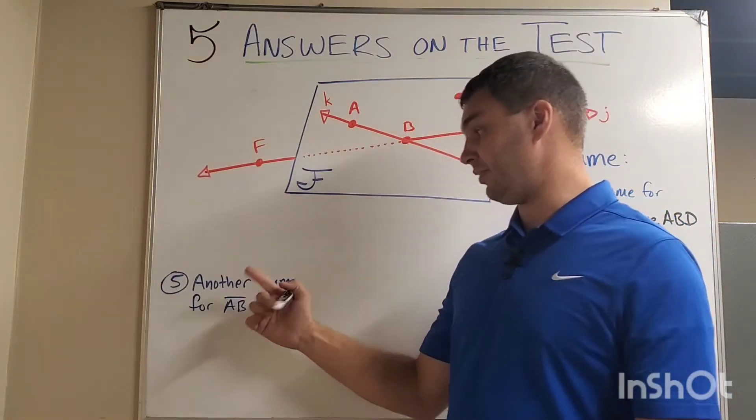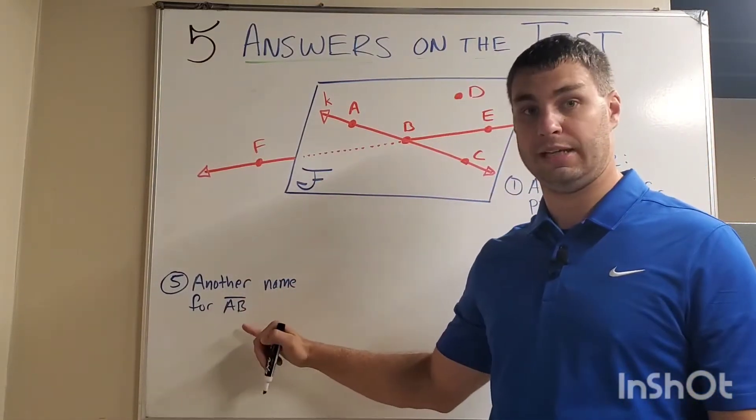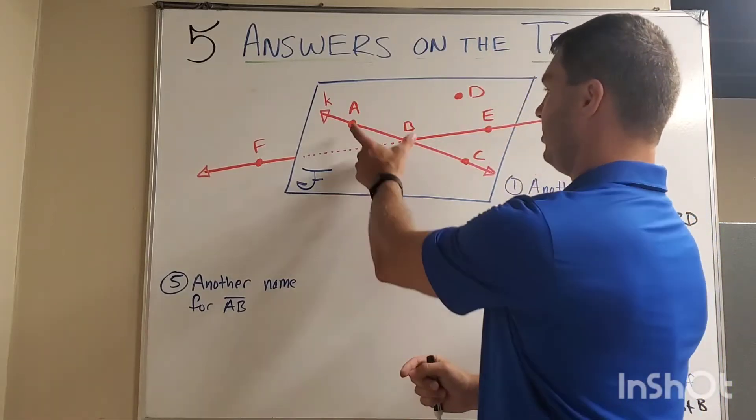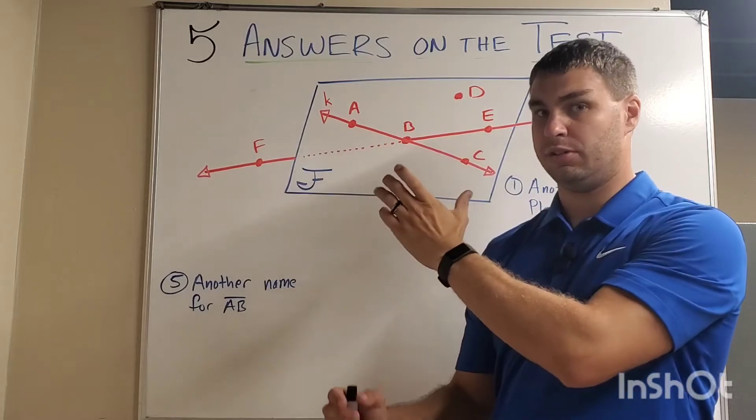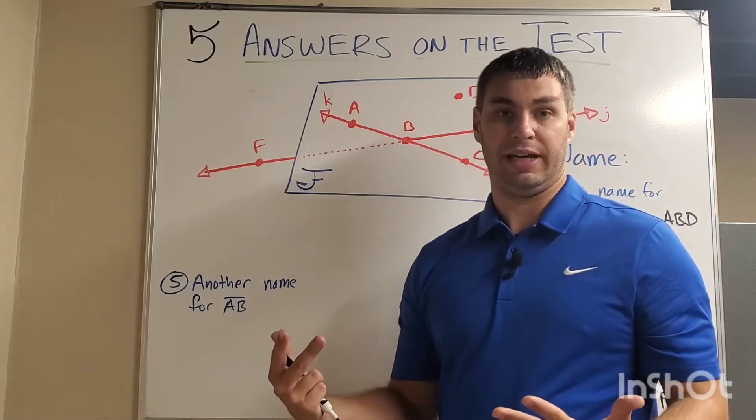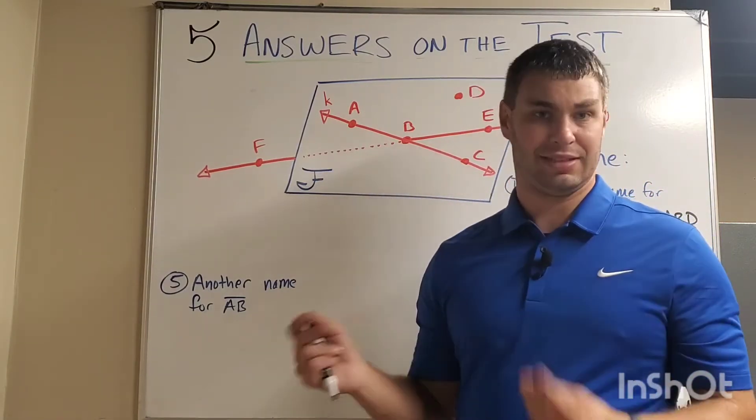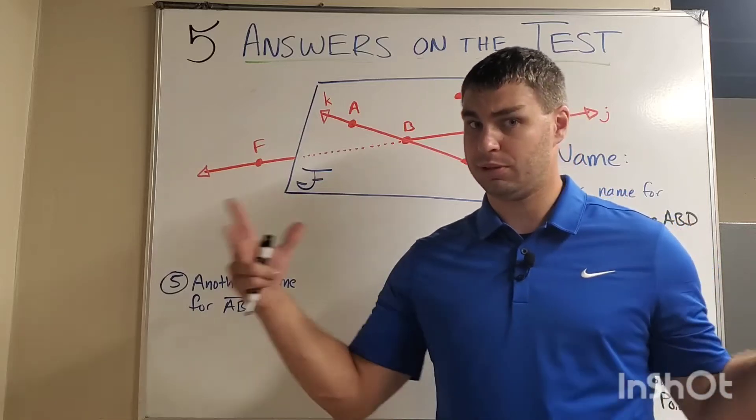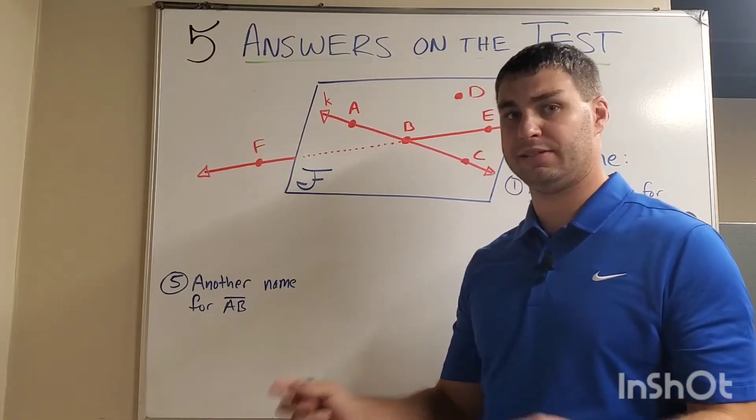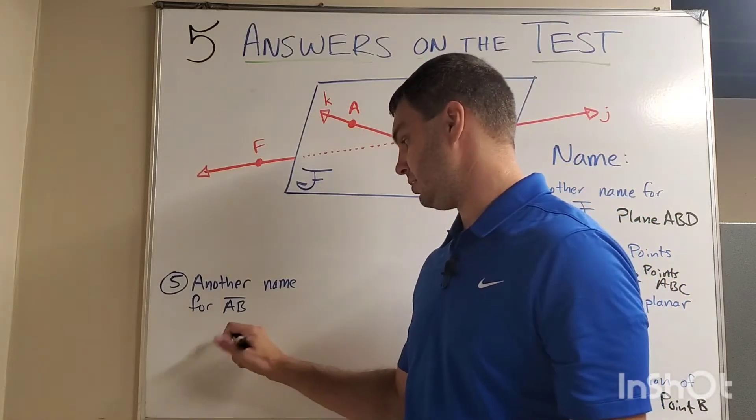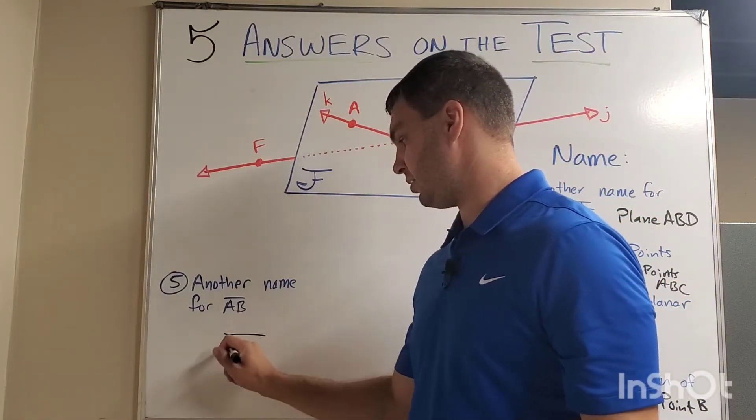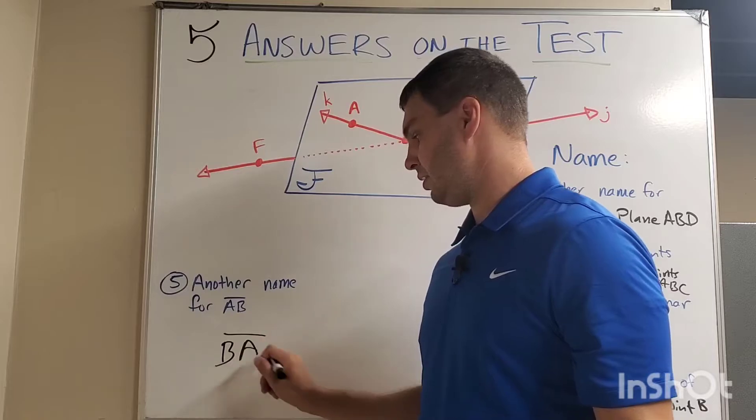That is, we need to name another or give another name for segment AB. Now, if you look at segment AB here, it's only talking about this specific part. So, I need to name that in such a way where it means the same thing, right? Nothing more, nothing less. And the only way to do that is to flip the letters and call it segment BA. It's still a segment, right? But you're just flipping the letters. So, segment BA.